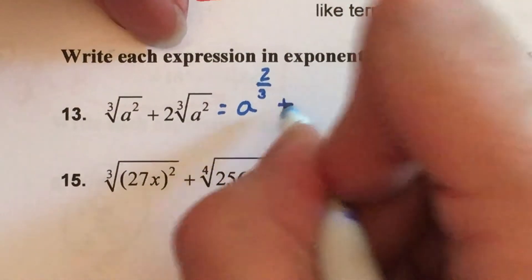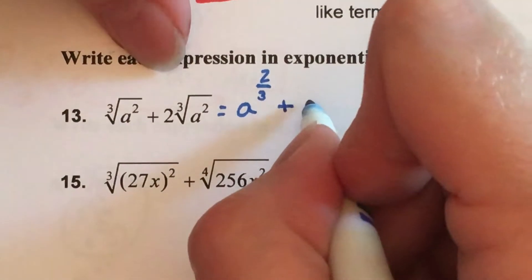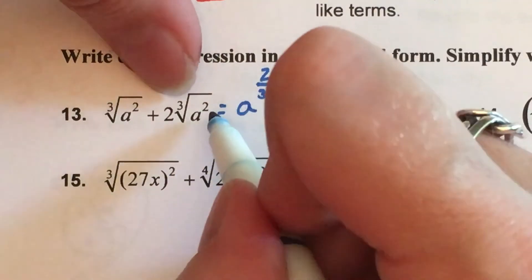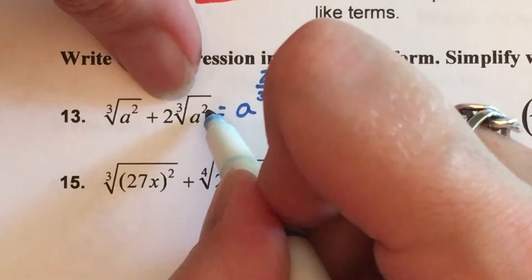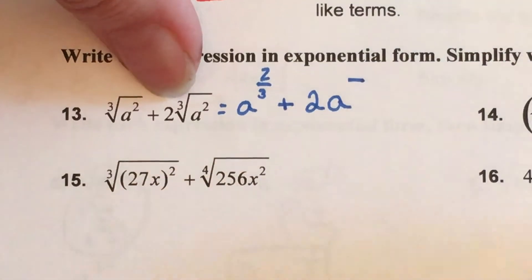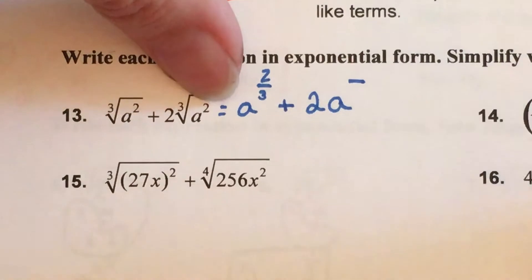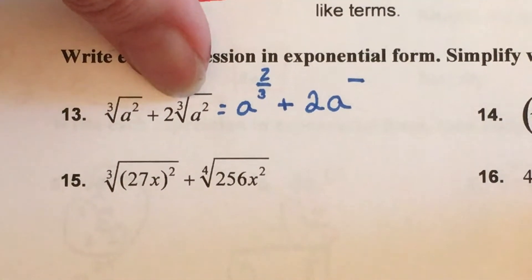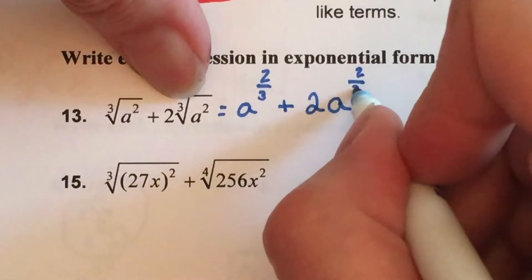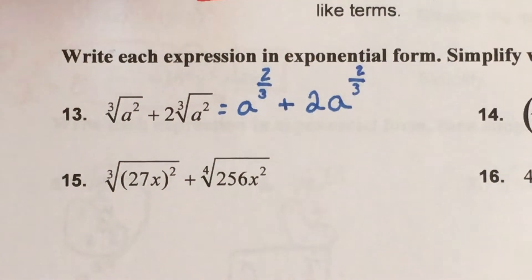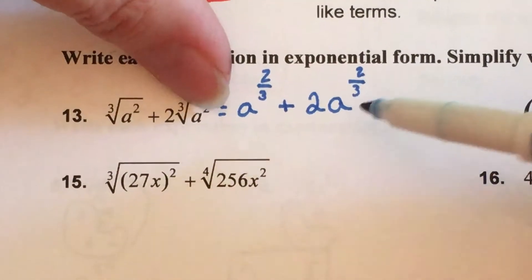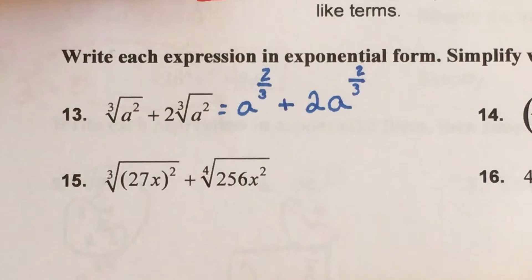Good job it goes in the numerator and the 3 goes in the denominator. Plus big 2 a and again because I have a root and an exponent I know my a has a fraction for its exponent. 2 is the full size power, 3 is in the radical. So these two a's have the exact same exponent.